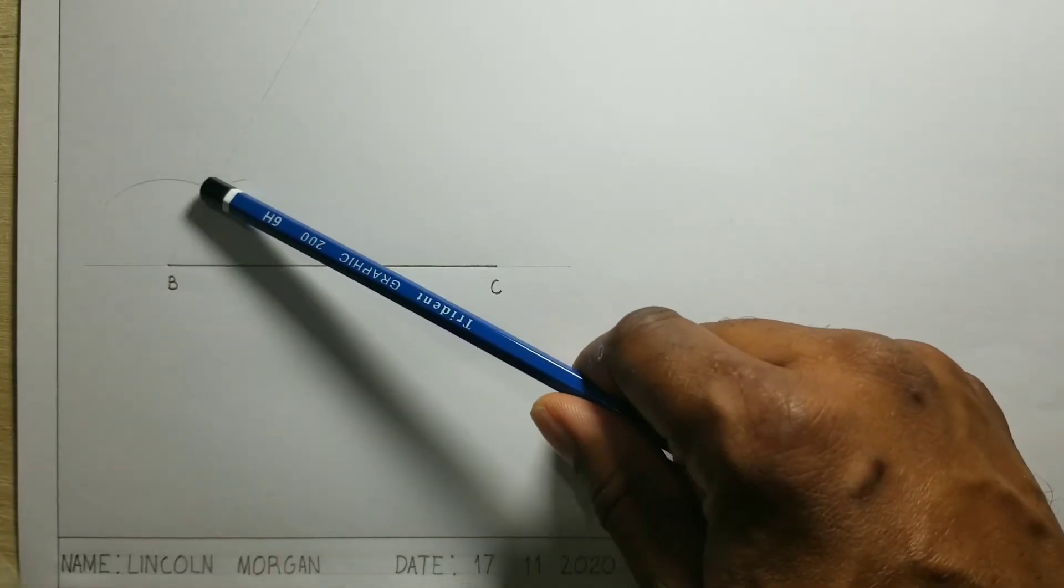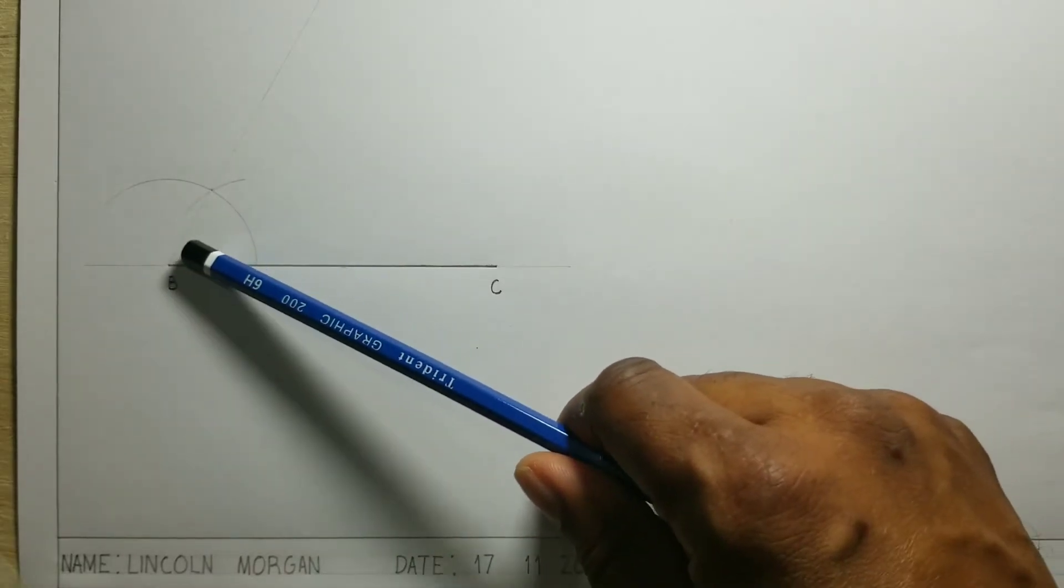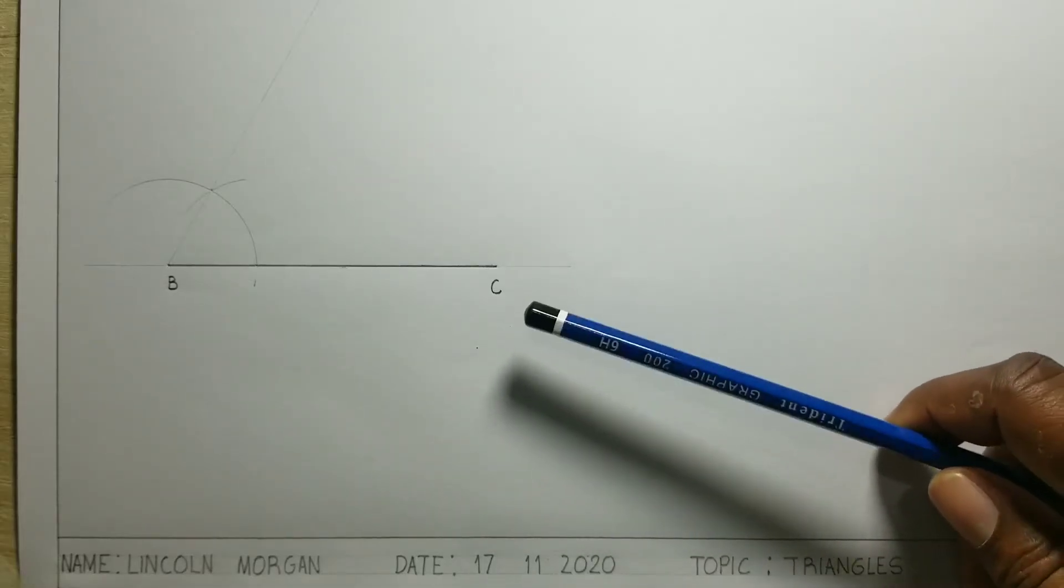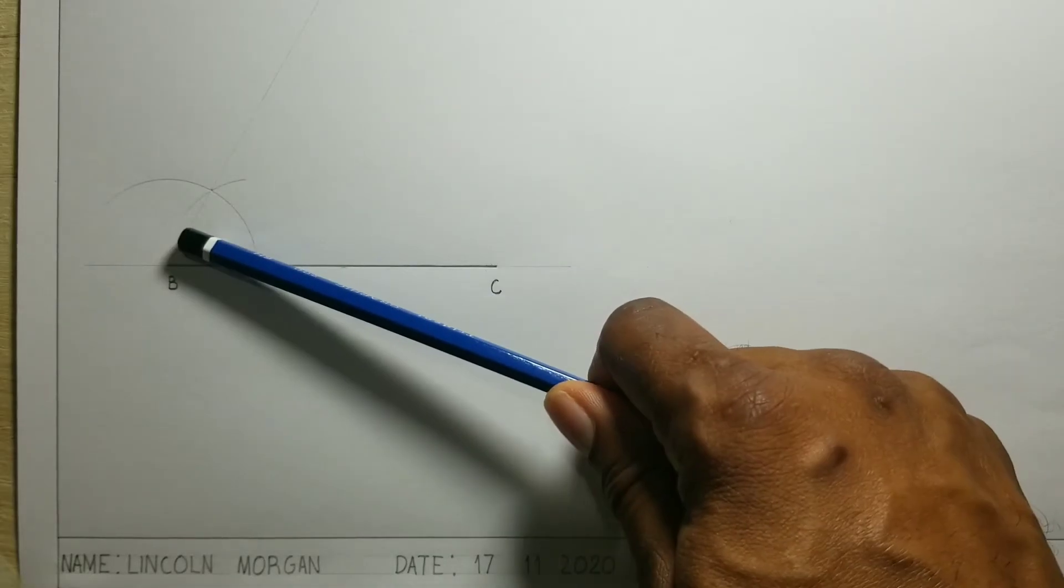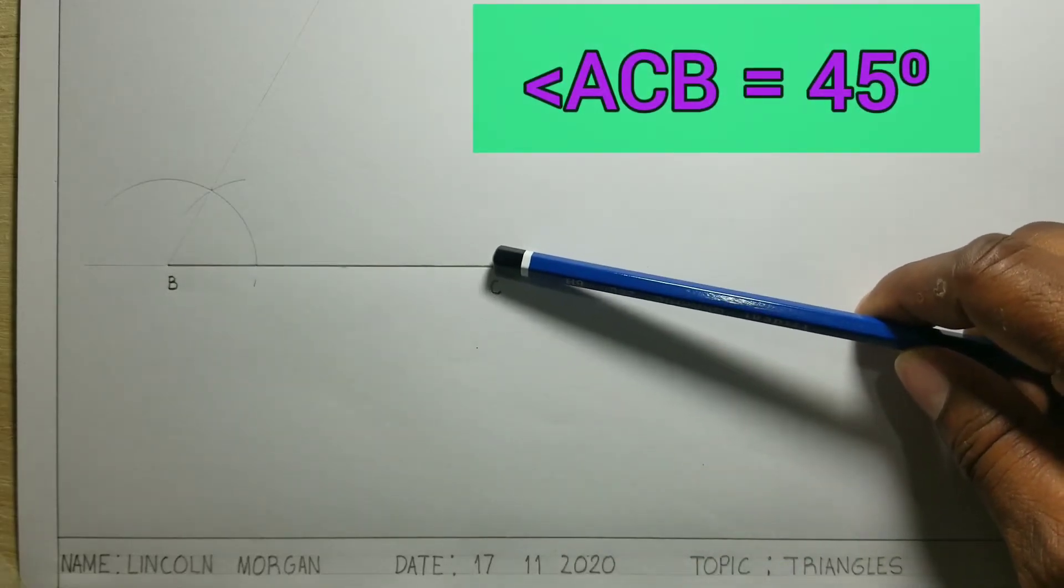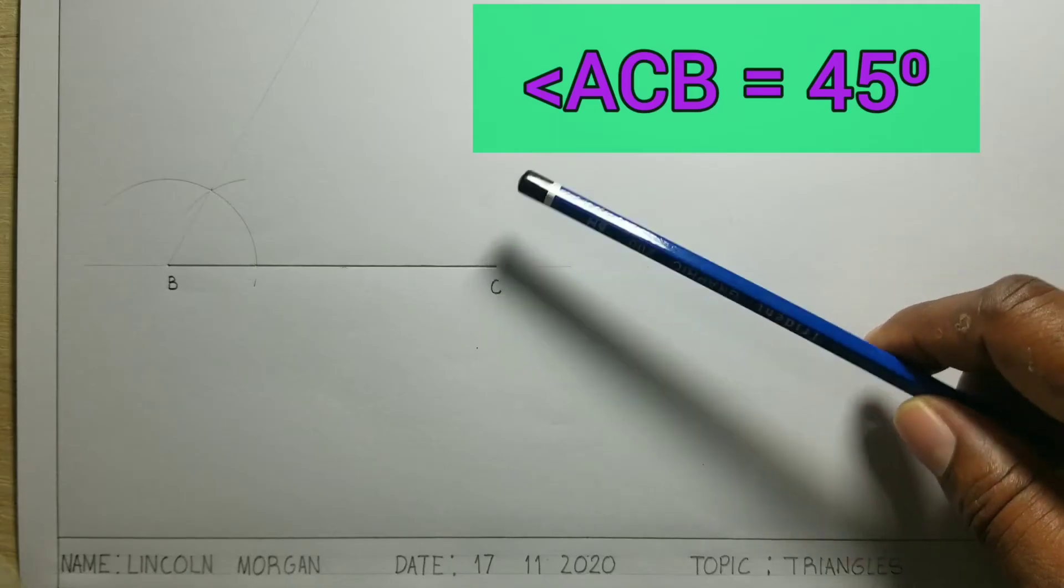Now this is my 60 degree angle. I will now construct another angle that was given. So the 60 was given and the other angle for the base right here is 45 degrees.